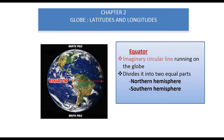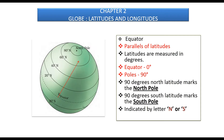Another imaginary circular line cuts the globe into two halves — halfway from the north pole and halfway from the south pole. This line is called the equator. The northern half is the northern hemisphere and the southern half is the southern hemisphere. The equator is an important reference point to locate places on earth.